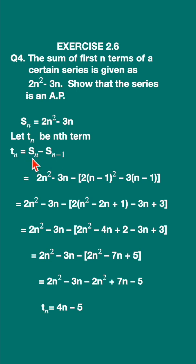Let us do it. Write down Sn, 2n square minus 3n minus S(n minus 1). In this you have to substitute n by n minus 1. Let us put in place of n, let us write down n minus 1 the whole square minus 3 into n minus 1.